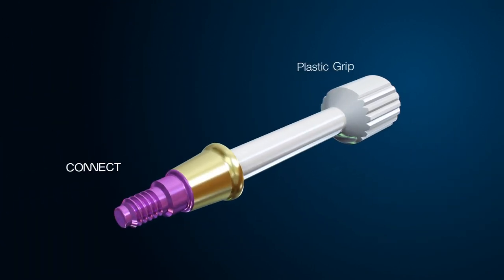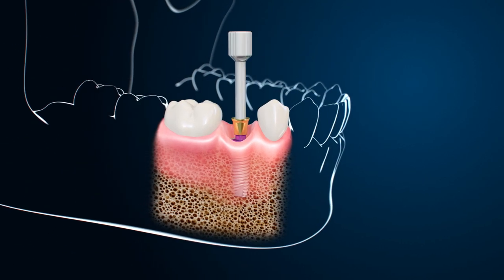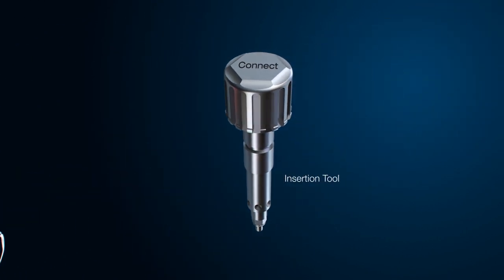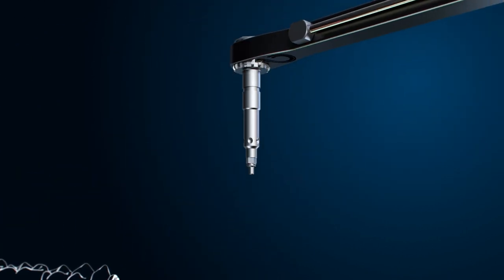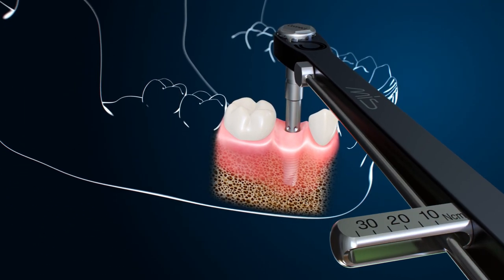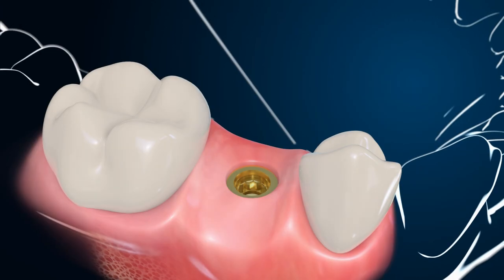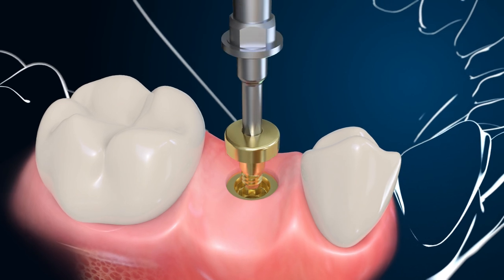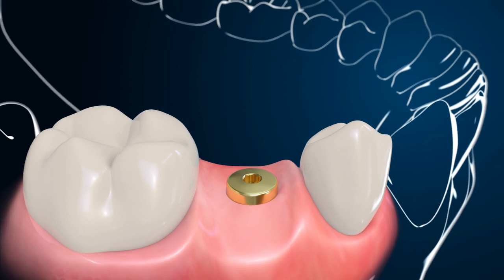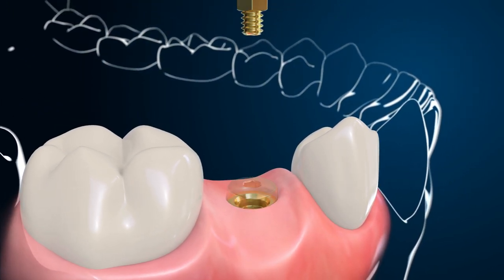The Connect procedure involves attaching the MIS Connect to the placed implant according to the gingival height and platform, and tightening it using the Connect insertion tool. At this point there are two options available: either placing a healing cap for a certain period, or loading with a temporary restoration.